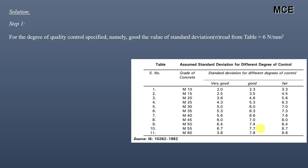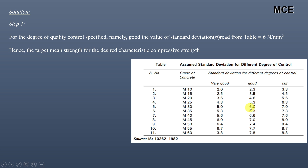For the target strength, the degree of quality control specified is good. From the IS code table, the value of standard deviation for M30 with good quality control is 6 N/mm². Therefore, the target mean strength is FCK + 1.65 × σ = 30 + 1.65 × 6 = 39.9 N/mm².